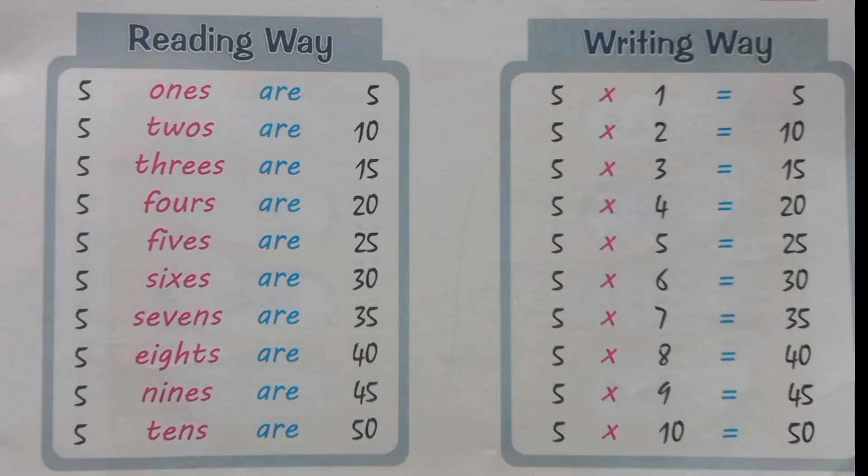Table of five. Five, one's a five. Five, two's a ten. Five, three's a fifteen. Five, four's a twenty. Five, five's a twenty-five.